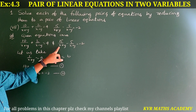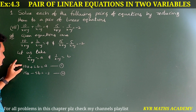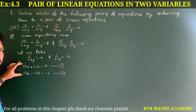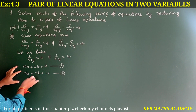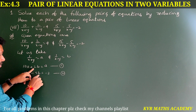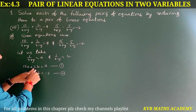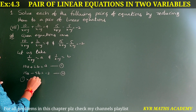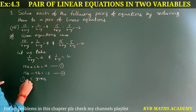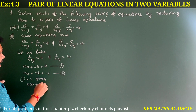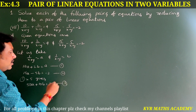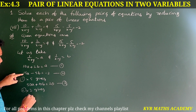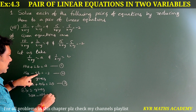We solve using the elimination method. The coefficients of a and b are not the same, so multiply equation 1 by 5 and equation 2 by 2. This gives: 50a + 10b = 20 (equation 3), and 30a − 10b = −4 (equation 4).